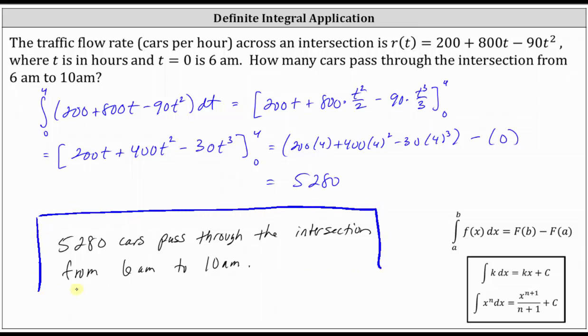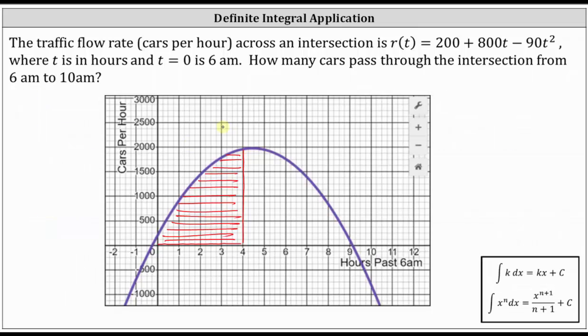which again, going back to the graph is equal to this red area here, bound by the flow rate function and the x-axis over the closed interval from zero to four. I hope you found this helpful.